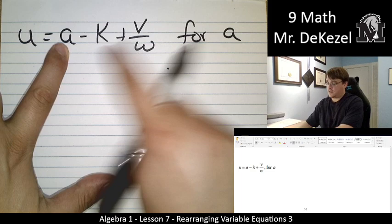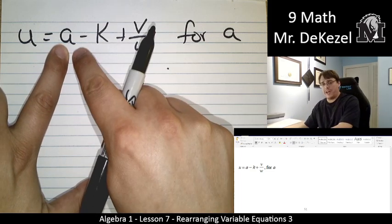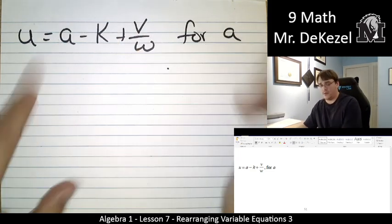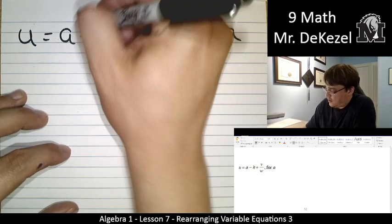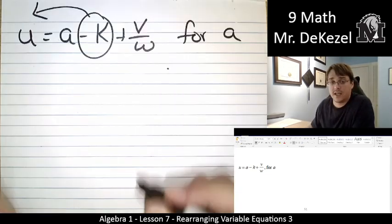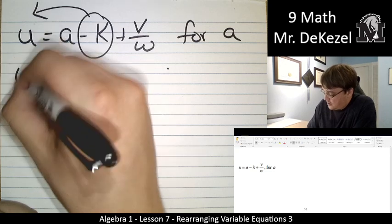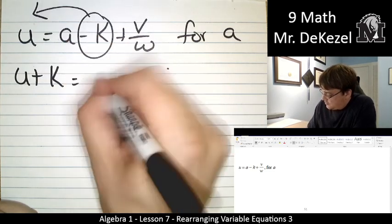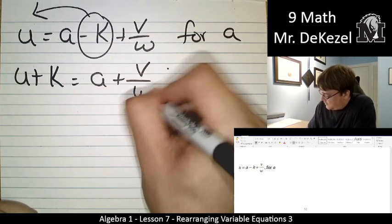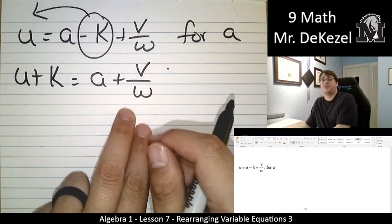So we have these two terms that we want to move over. Nothing is multiplied by a. They're just added to it. So let's move the minus k over first. It's negative on one side. We add it to the other side. u plus k is equal to a plus v divided by w.